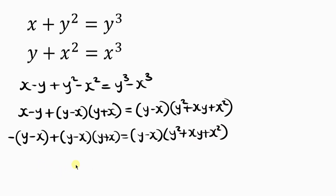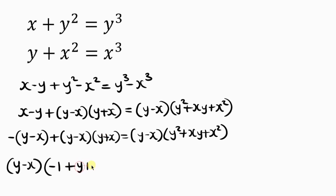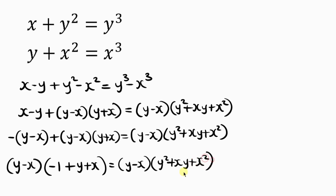Now we can factorize the left-hand side. Notice that y minus x is common, so let's bring that out. We get y minus x times the quantity negative 1 plus y plus x, equal to y minus x times y squared plus xy plus x squared.